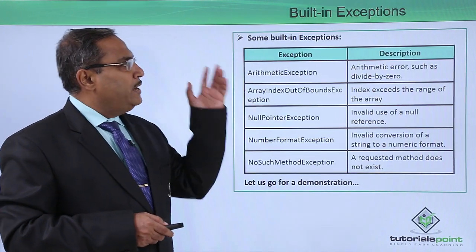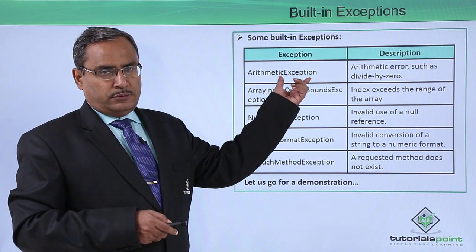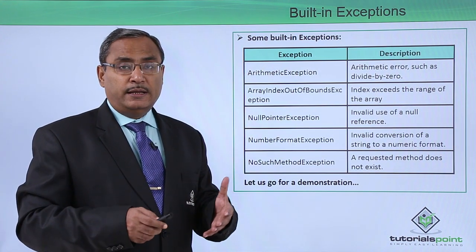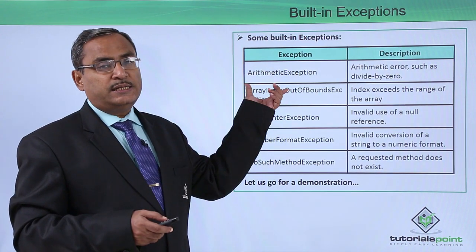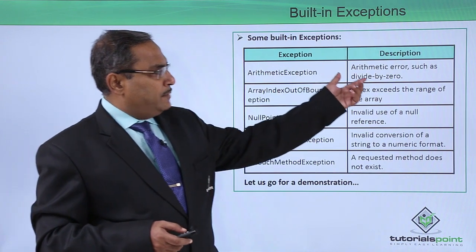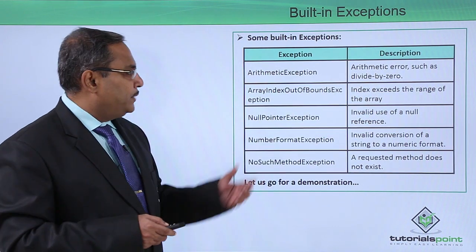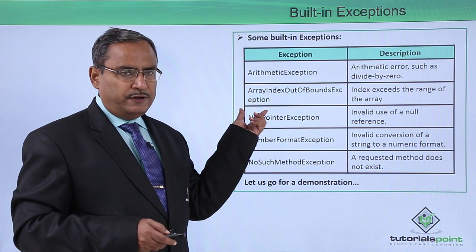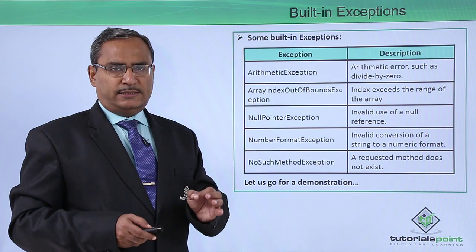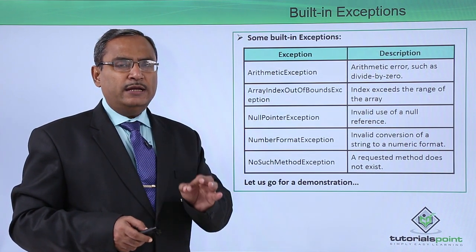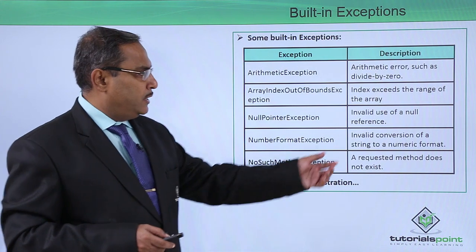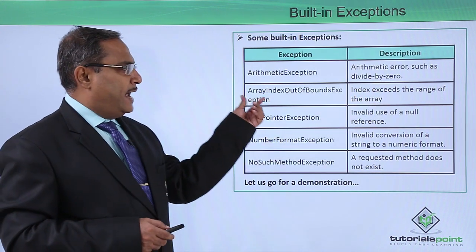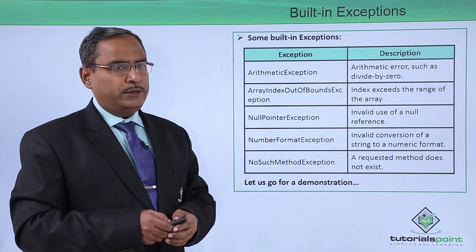Let us look at some built-in exceptions. ArithmeticException — from the name it is quite obvious that when you are doing some arithmetic operations and an exception occurs, this exception will be thrown, such as divide by zero. ArrayIndexOutOfBoundsException is thrown when you try to access a subscript or location of an array which is beyond its definition — that is, the index exceeds the range of the array.